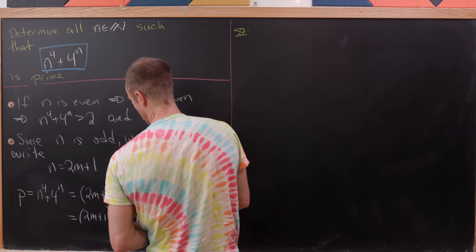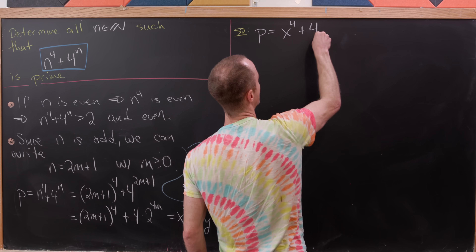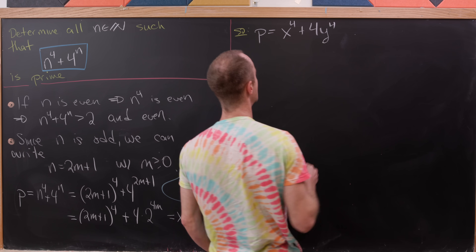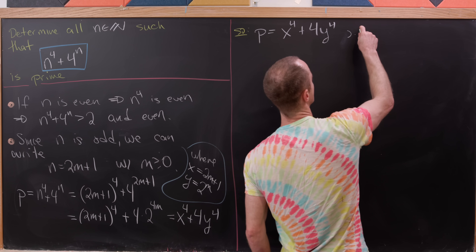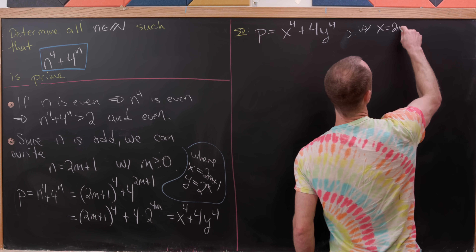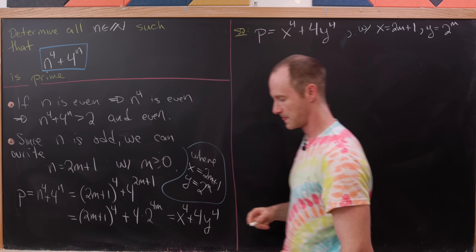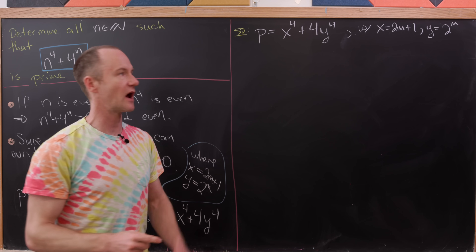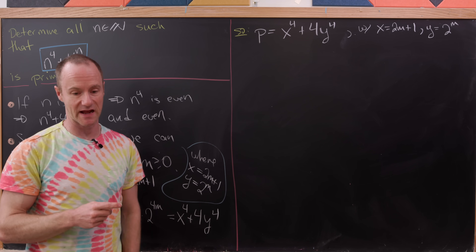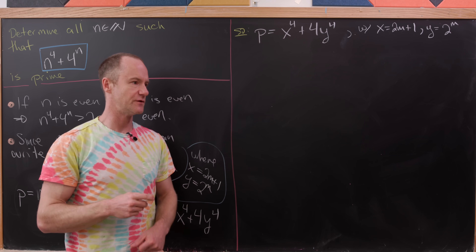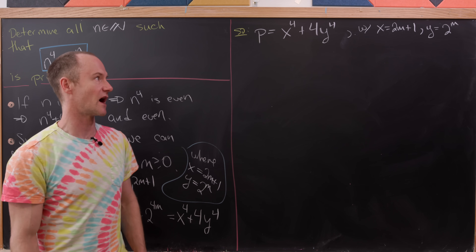So we have p equal to x to the fourth plus 4y to the fourth, with x equal to 2m+1 and y equal to 2 to the m. This may not seem super helpful, but there is in fact a really nice factorization of the right-hand side. If you've done a lot of math contest preparation you may already know this factorization, but we're going to derive it.